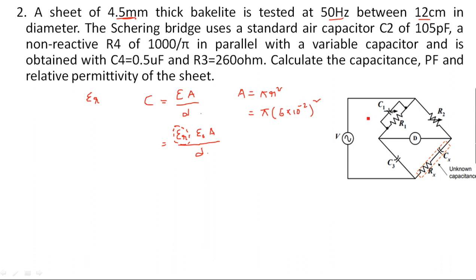The Schering bridge uses a standard air capacitor C2 equal to 105 picofarads, and a non-reactive R4 equal to 1000/π ohms, in parallel with a variable capacitor C4 equal to 0.5 microfarads. R3 is equal to 260 ohms. A sheet of 4.5 millimeter thickness is tested at 50 Hz, and the sheet is 12 centimeters in diameter.